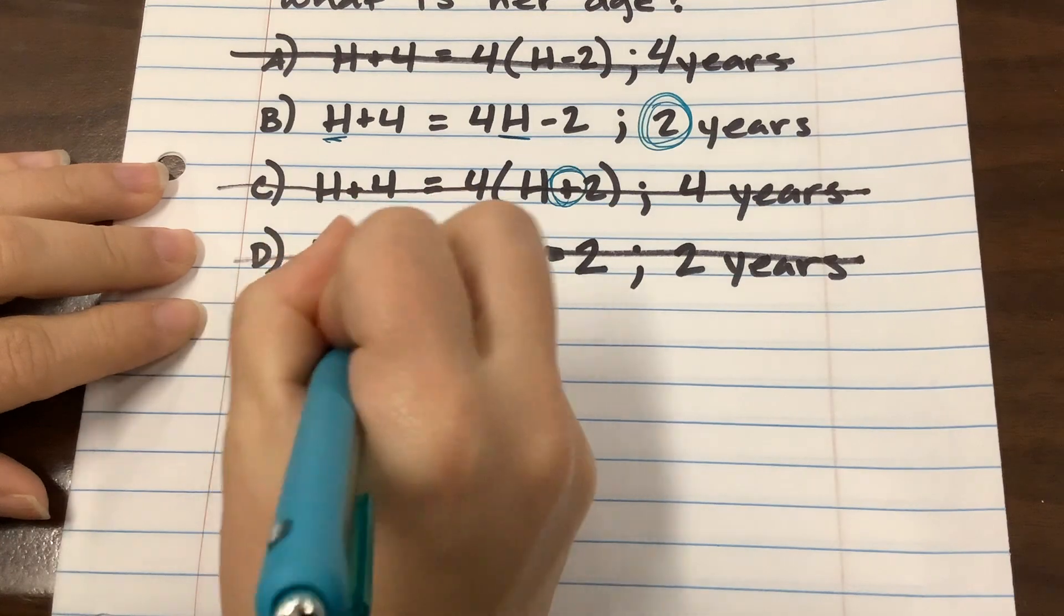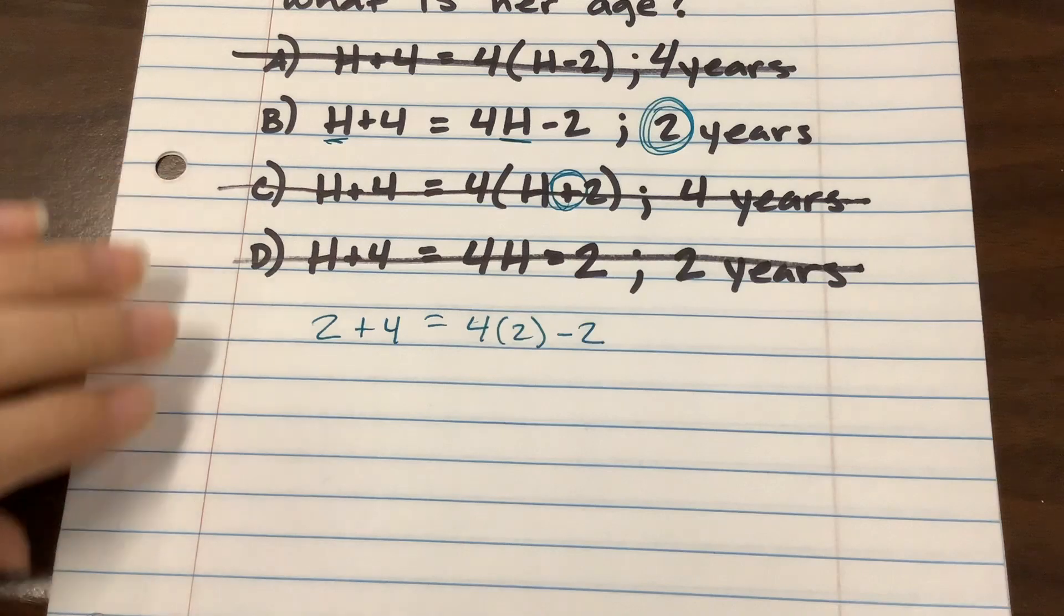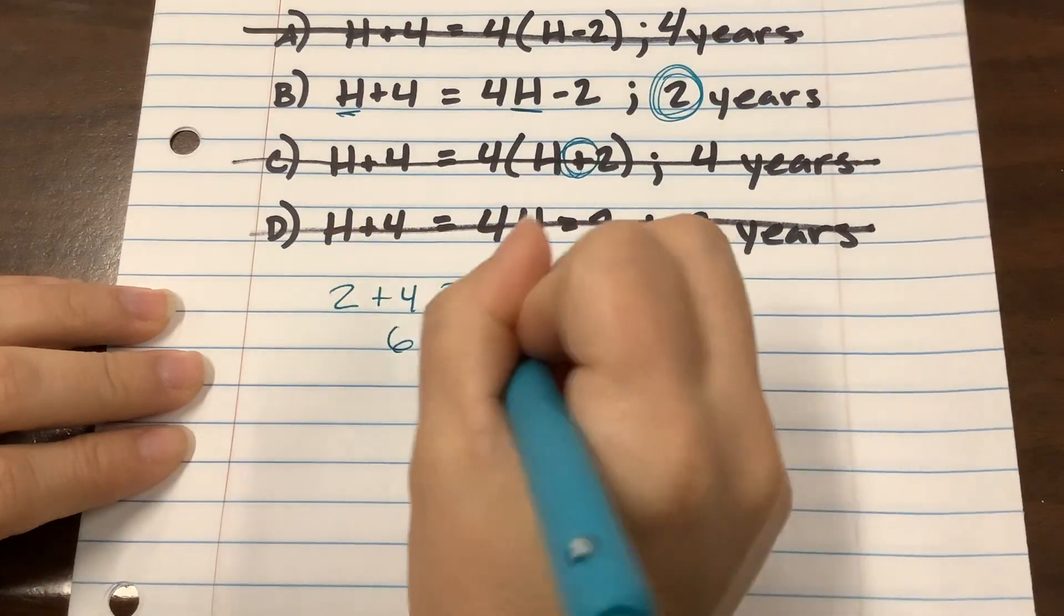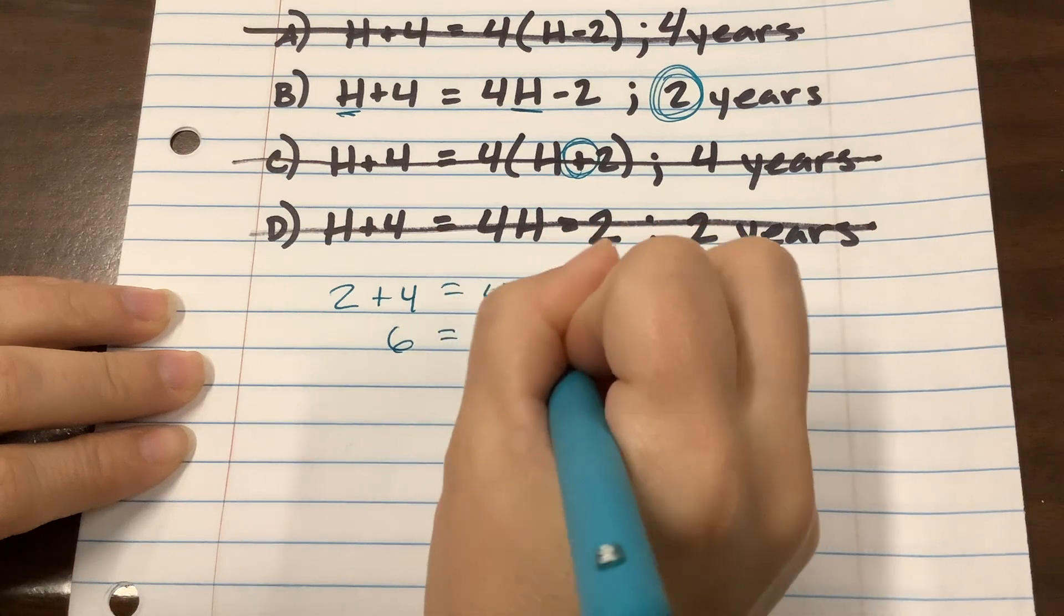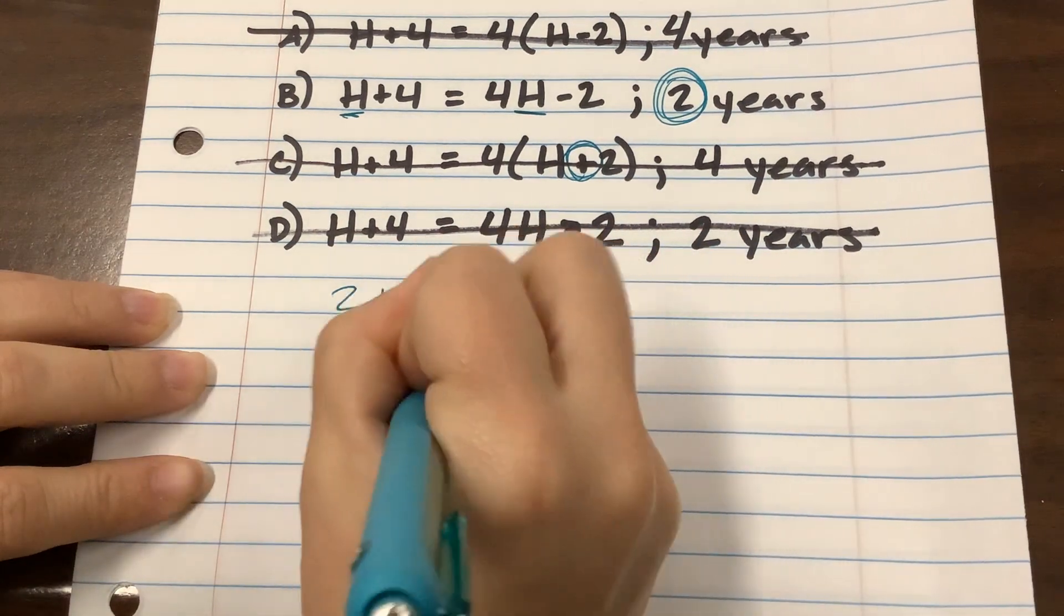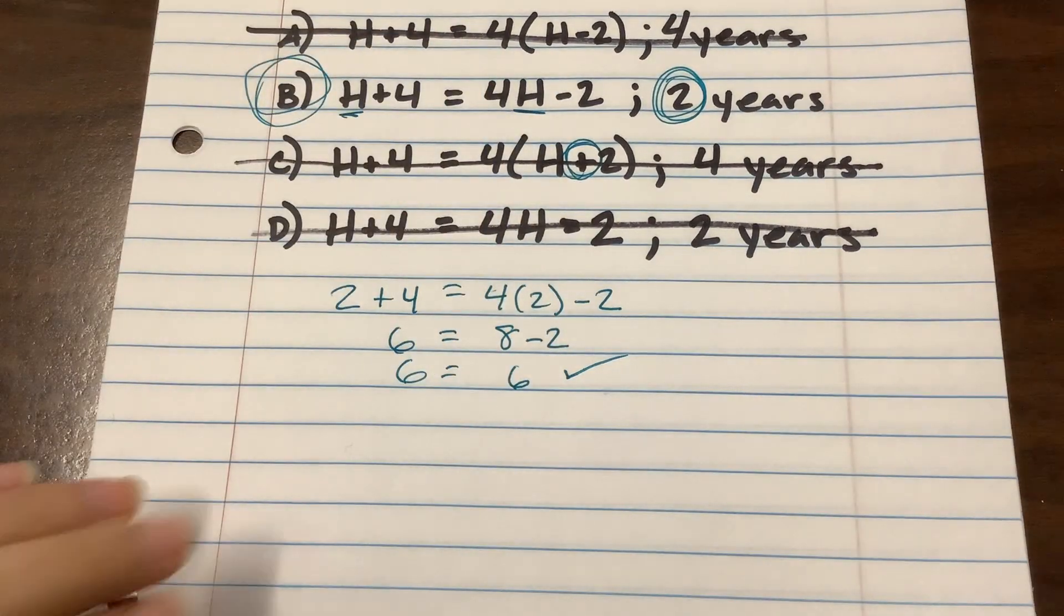So is two plus four equal to four times two minus two? Well, two plus four is six. Four times two is eight. But eight minus two is what? Also six. So we know that that works. That's why it's B.